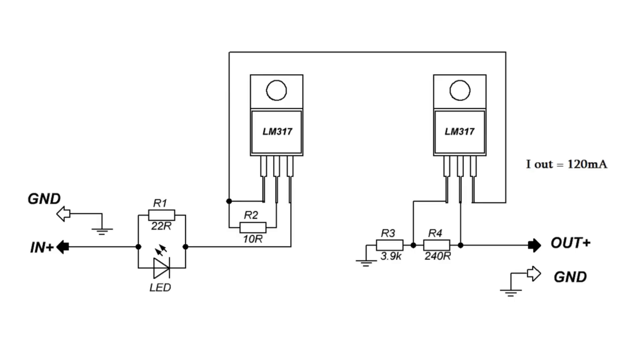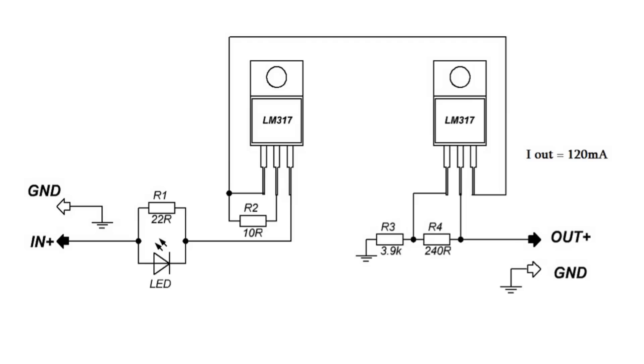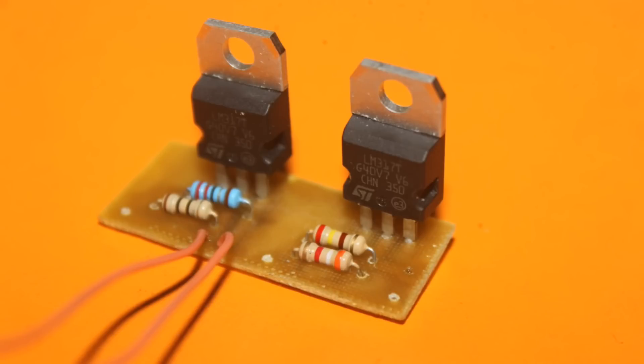The scheme is very simple. Just two adjustable voltage regulators LM317. The first circuit works as a current regulator. The second is output voltage stabilizer. Since the current is less than 120mA, the chips will not have to put on a radiator.